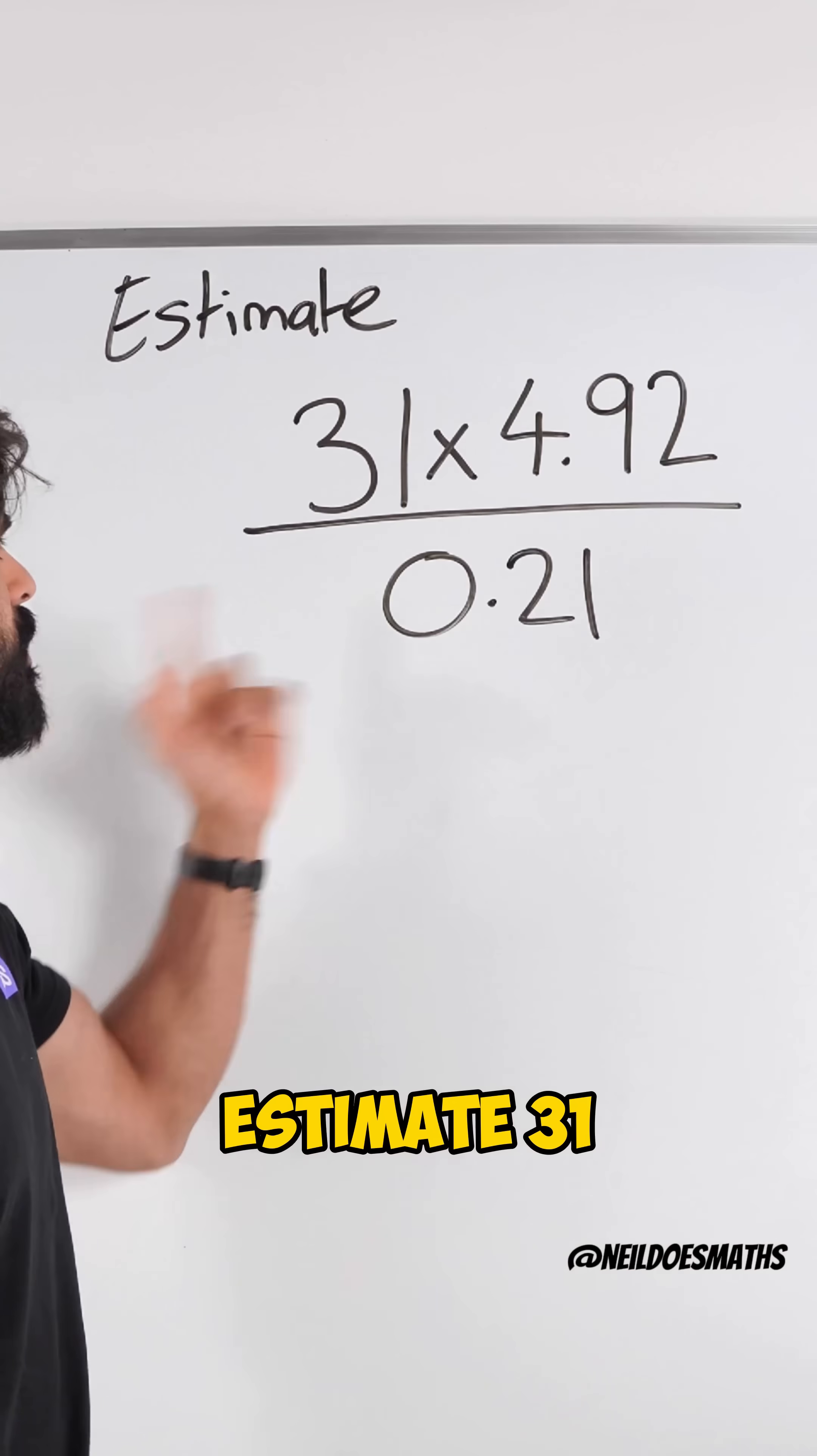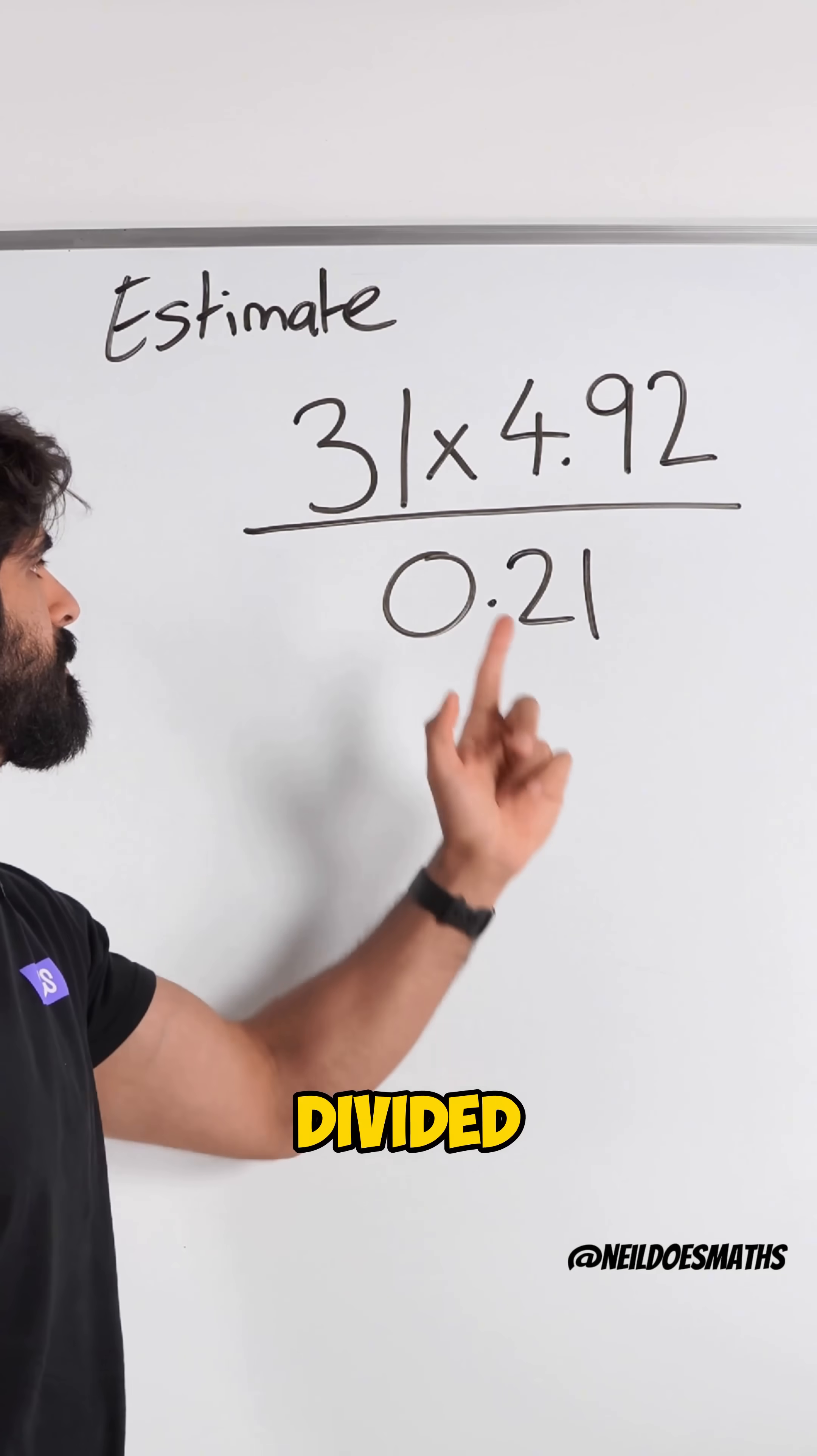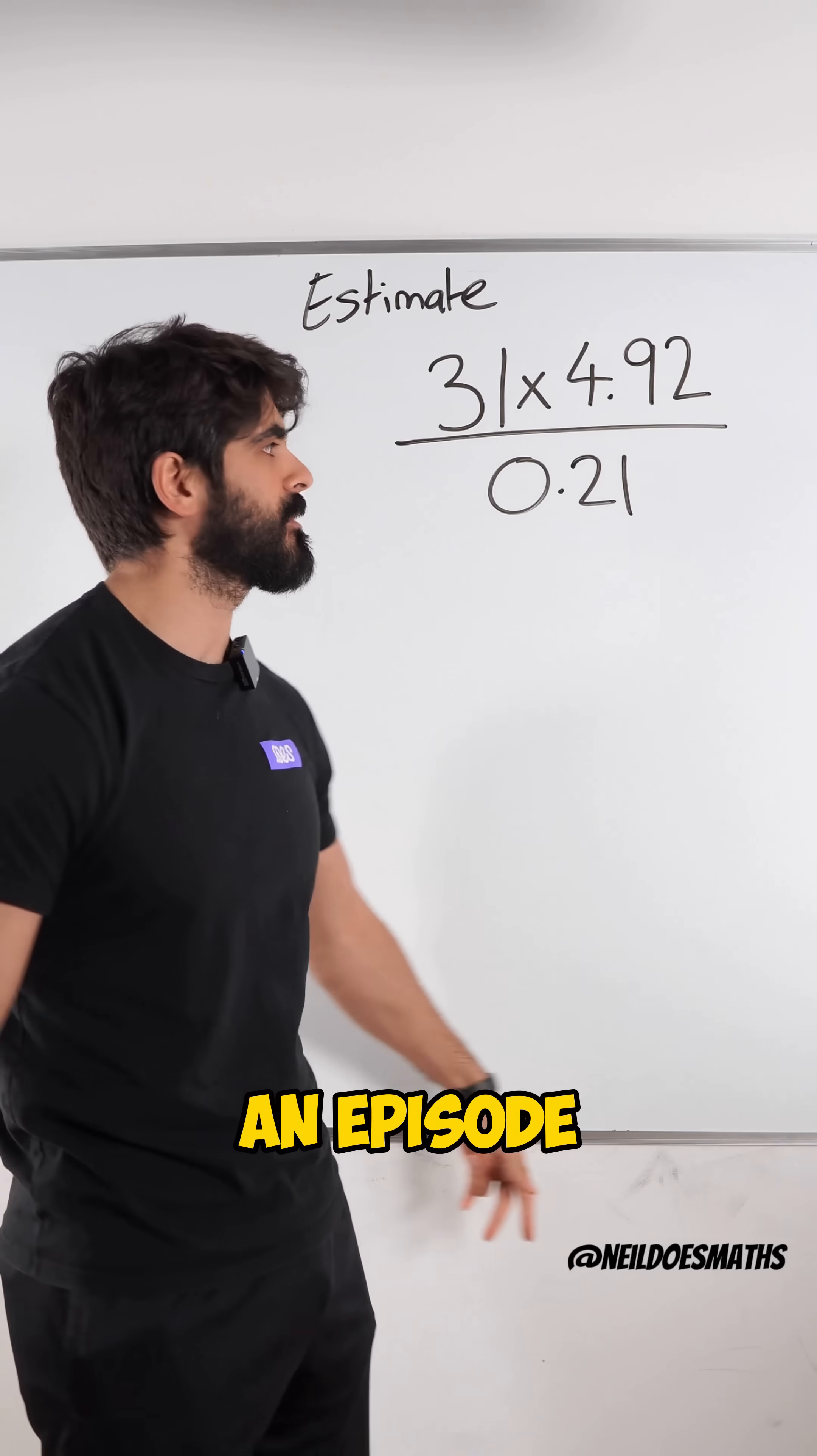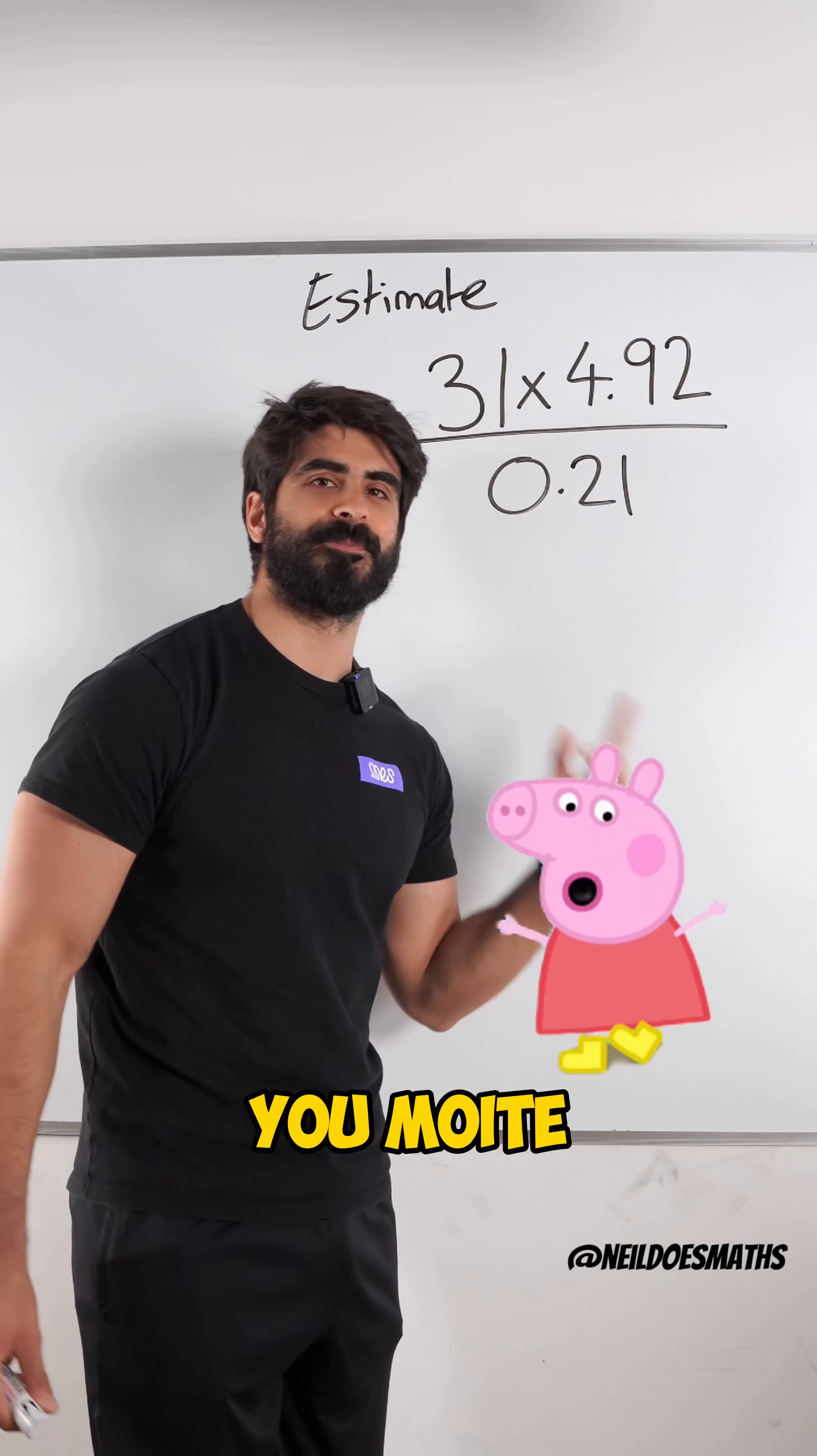Do you know how to estimate 31 times 4.92 divided by 0.21 in as quick of a time as watching an episode of Peppa Pig? Let me show you more.